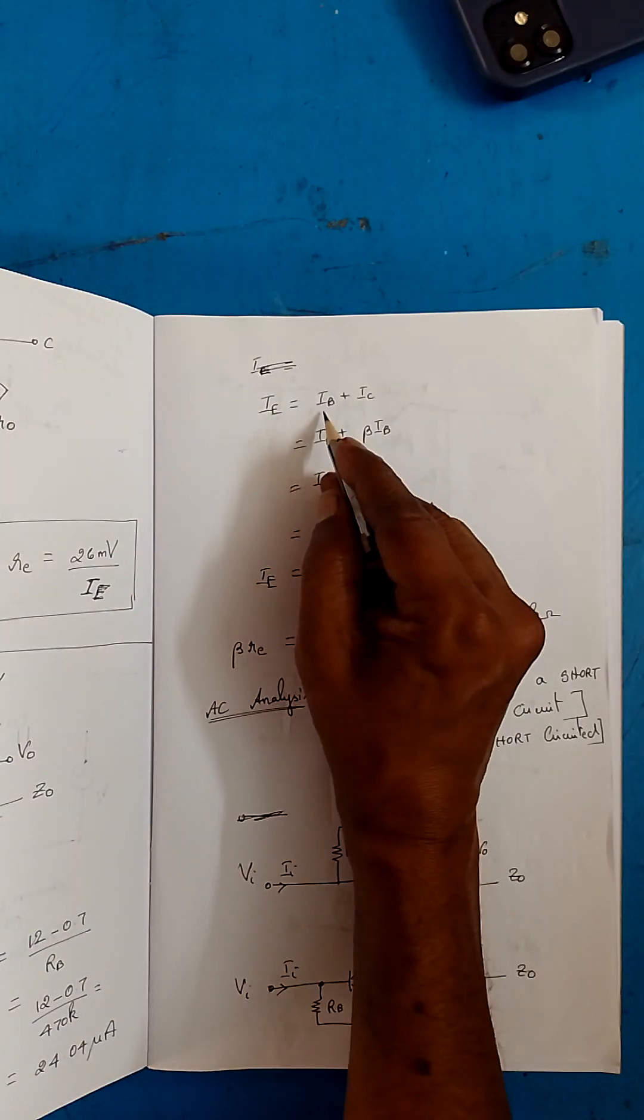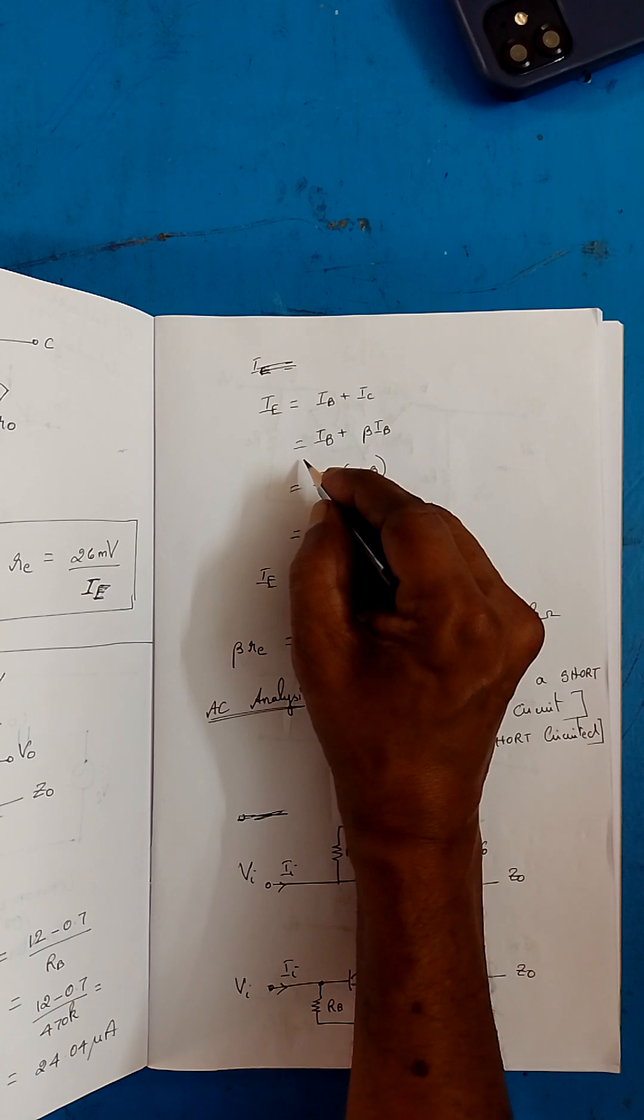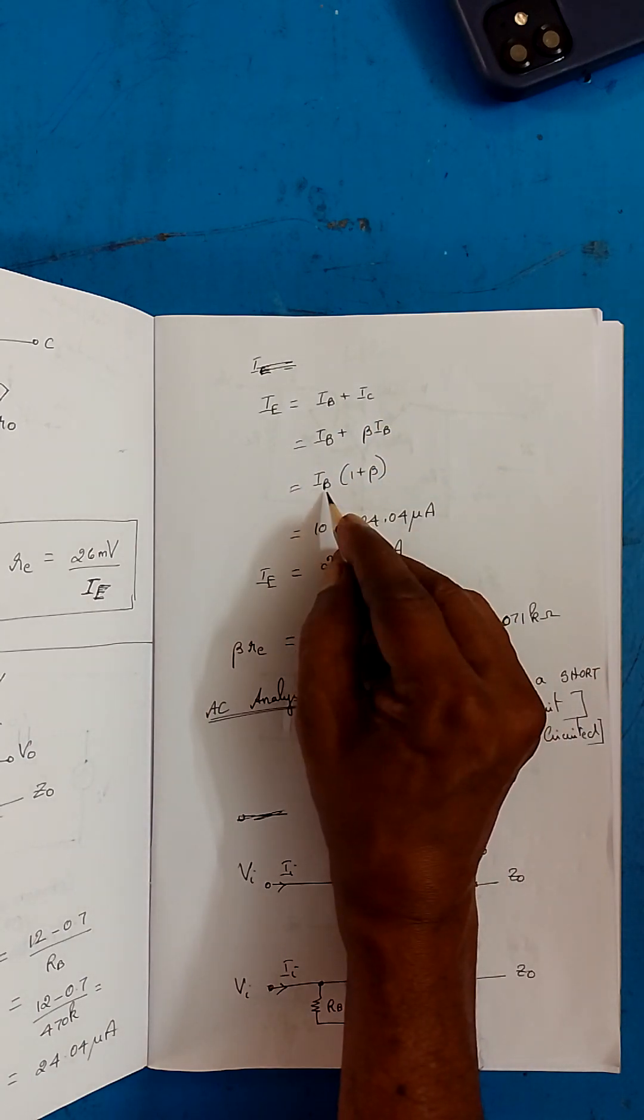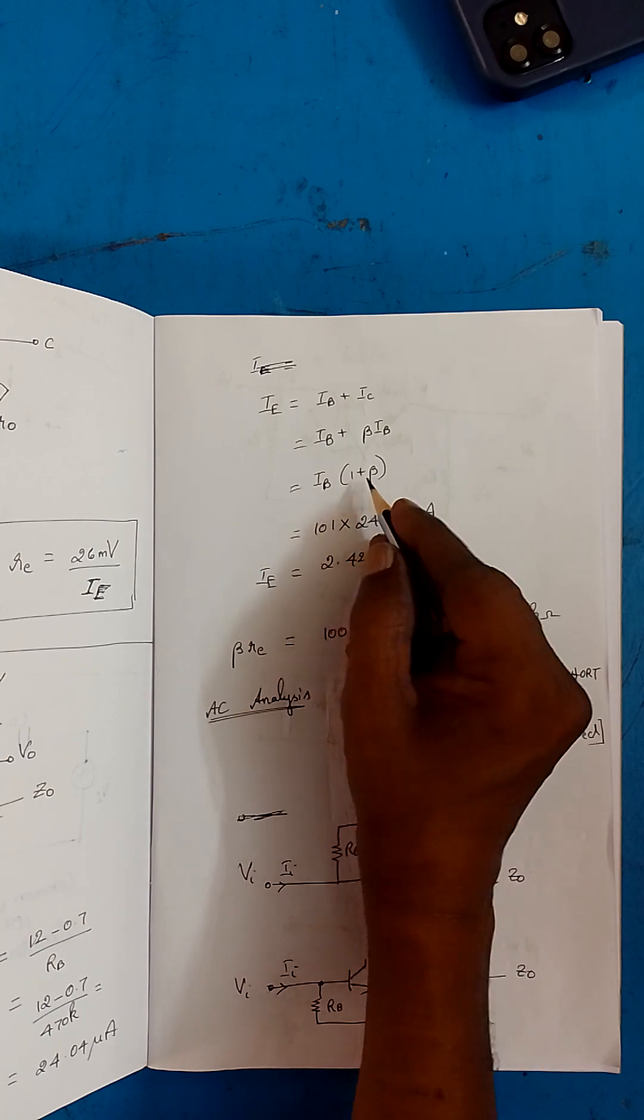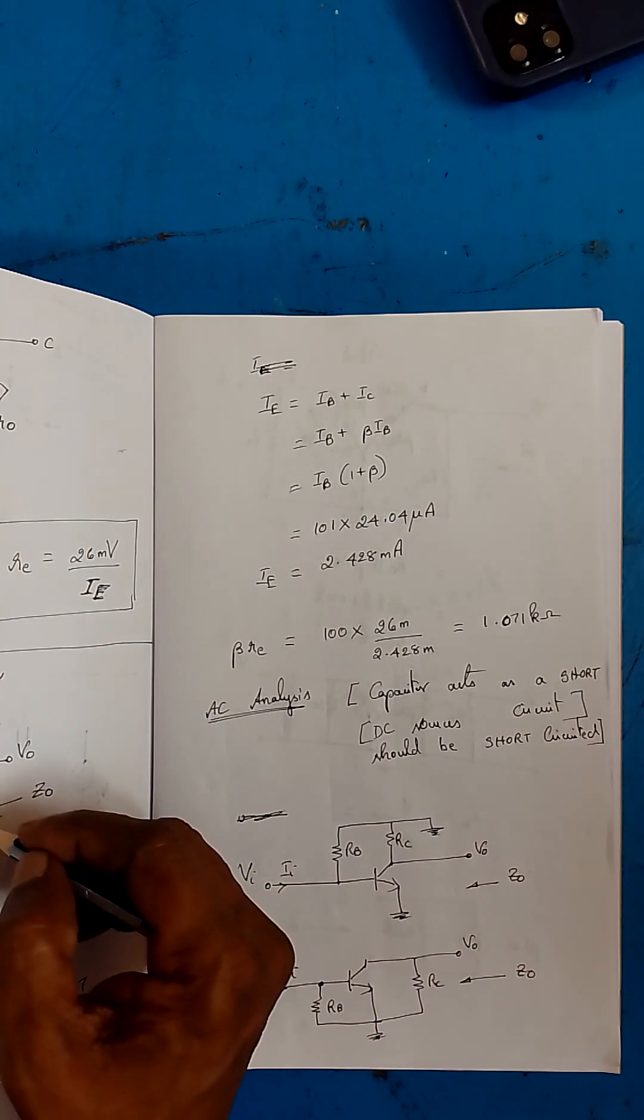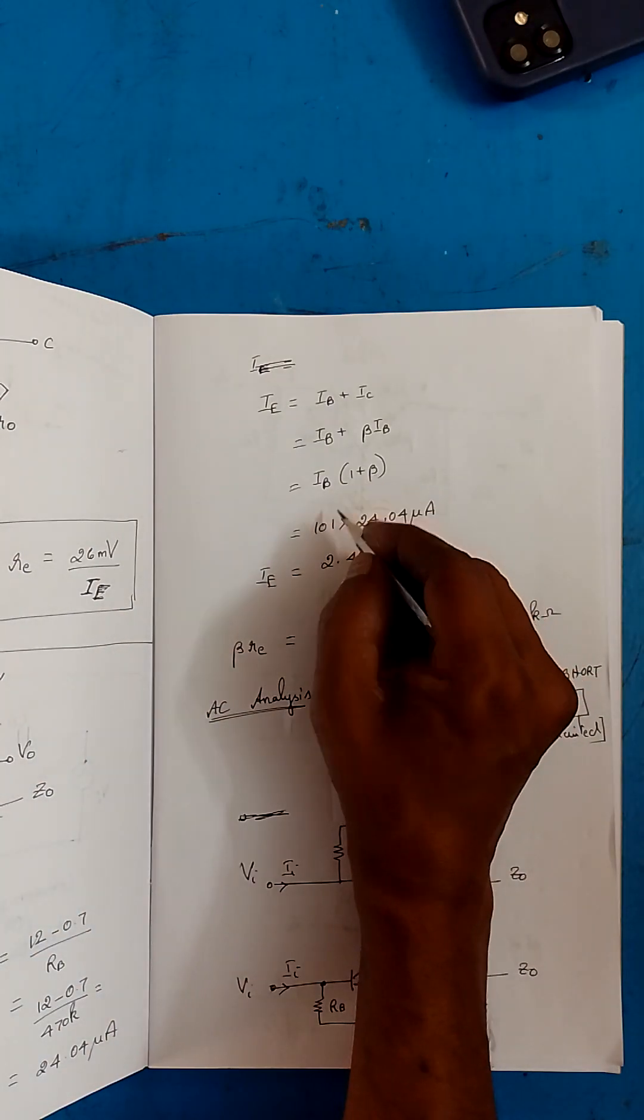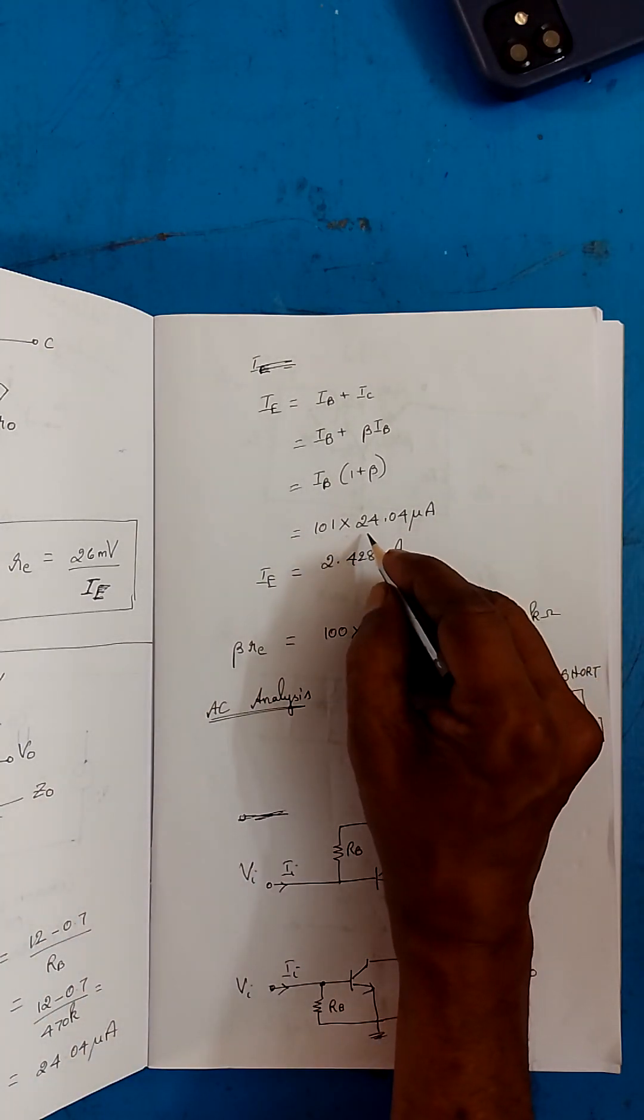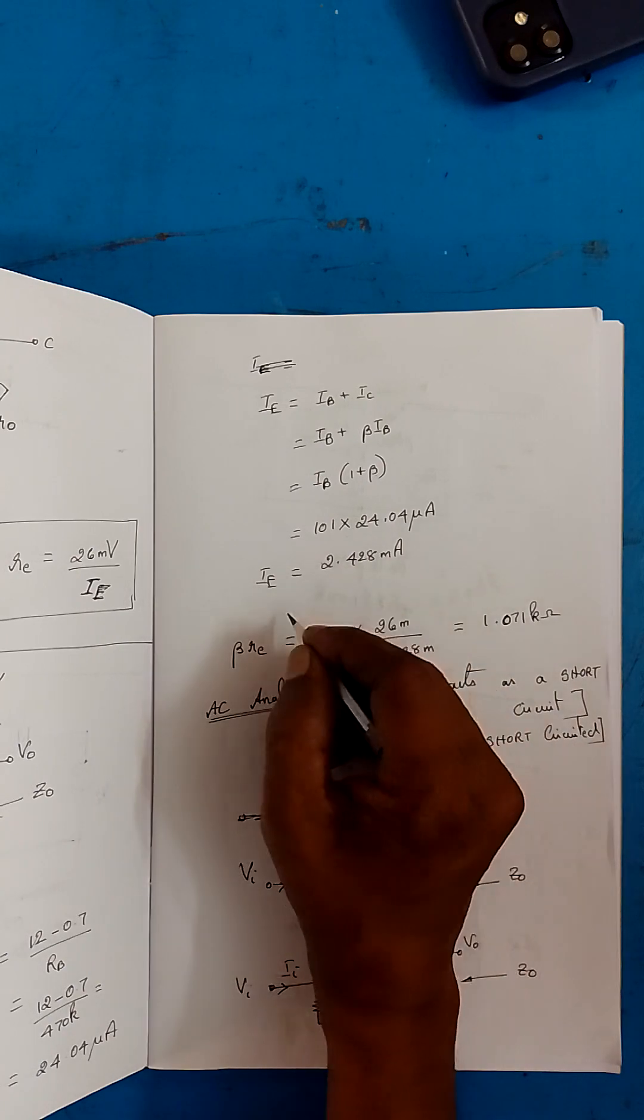We know that IE is equal to IB plus IC. IB plus IC is beta times IB. You take IB as common, which is 1 plus beta. In the question itself it is given that beta value is 100. So 100 plus 1 is 101 into IB value, which we just found as 24.04 microamps. IE is equal to, on simplification, 2.428 milliamps.